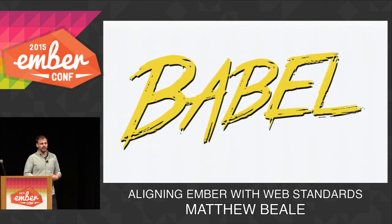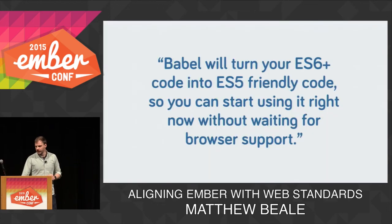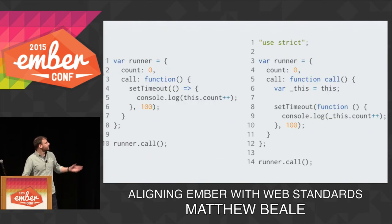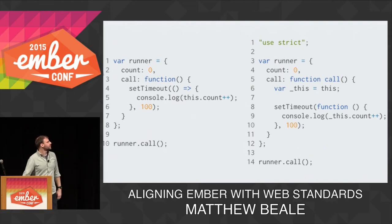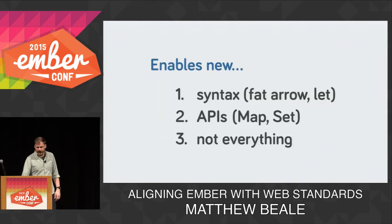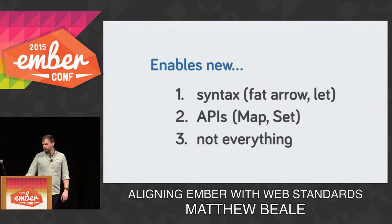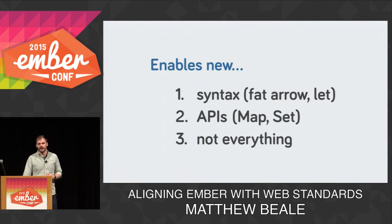This is where Babel comes in. Babel is a tool that takes your ES2015 new JavaScript code and turns it into ES5 old JavaScript code without you needing to worry about too many of the details. It'll take a fat arrow function and turn it into some code that changes the context of this. It enables new syntaxes, and it comes with some API polyfills. It helps us do a lot of the new features in ES6, which is really incredibly useful and very different from the last time we had to do this.